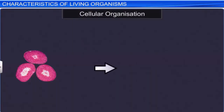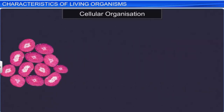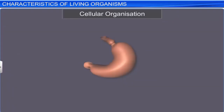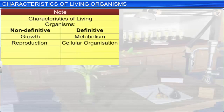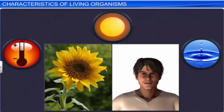Cellular organization is another important characteristic of living organisms. Such organization is not observed in the non-living, and hence cellular organization is also a definitive feature in all life forms. Consciousness is another feature associated with living organisms. We know that all living organisms sense and respond to environmental stimuli, such as light, water, and temperature.